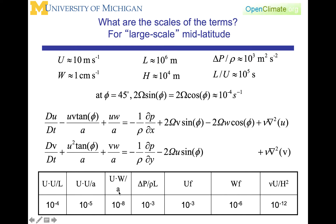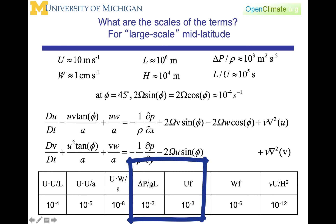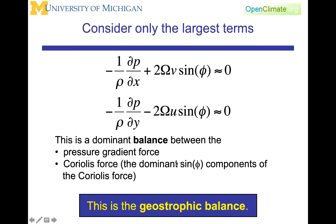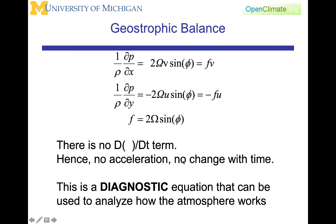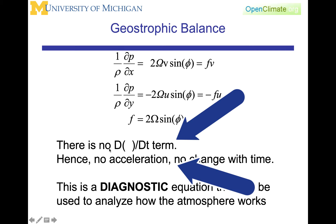When we do the scale analysis of these equations, we find that two terms — the pressure gradient term and the Coriolis terms — are the largest. This led to the concept of geostrophic balance: the dominant balance between the pressure gradient force and the Coriolis force. One problem with this balance for predicting the evolution of the flow or the weather is that there is no time dependency — no d/dt term, no acceleration.